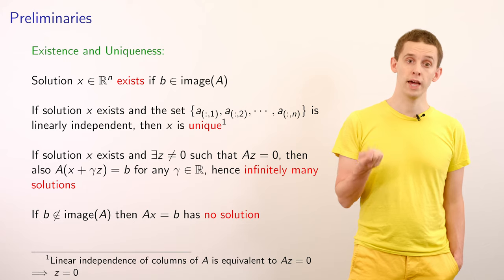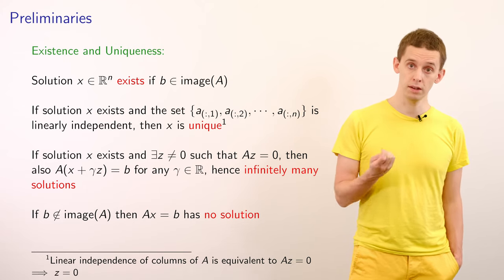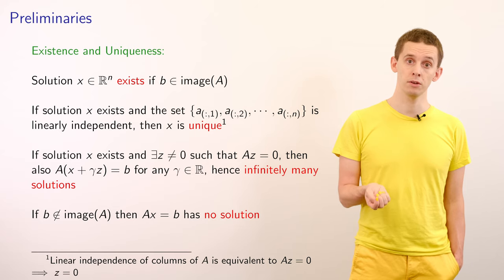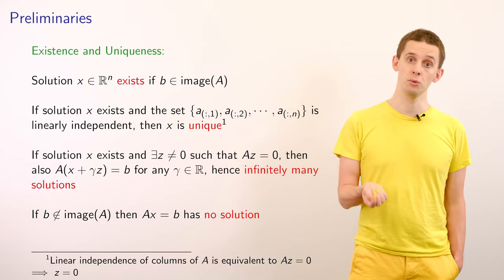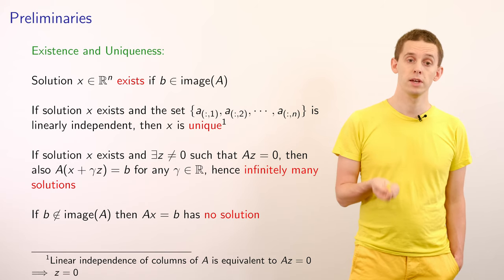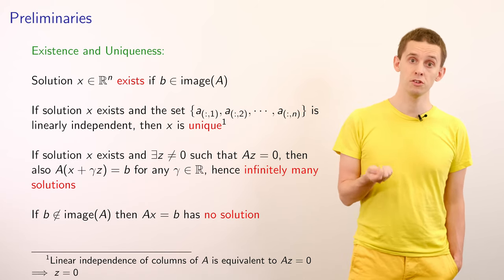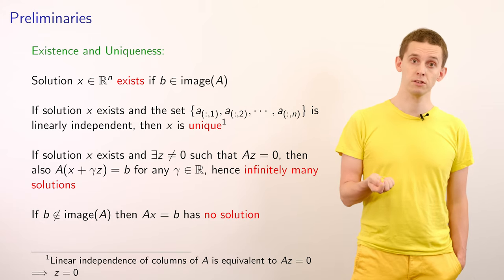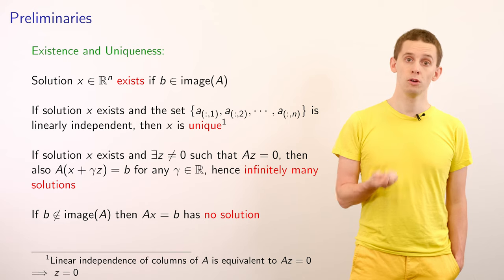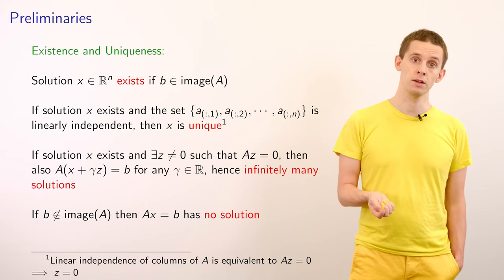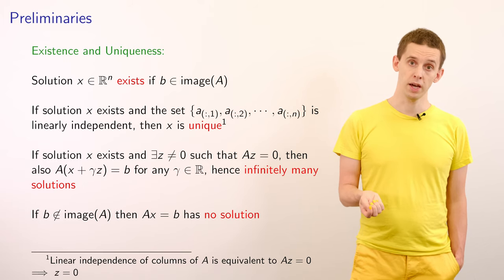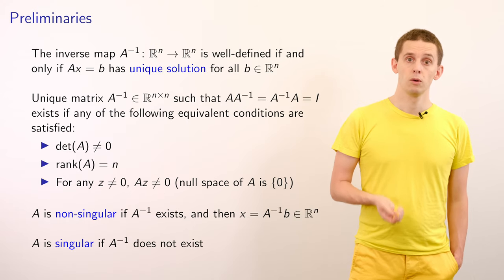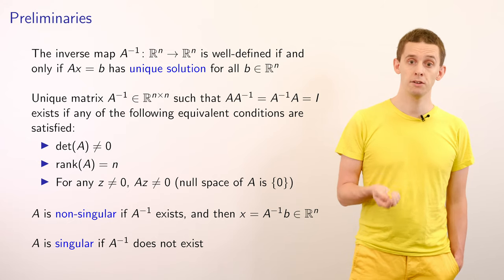So now let's look a bit further at existence and uniqueness. So we can say a solution X will exist if b is contained in the image of A. And if a solution exists and the columns of A are linearly independent, then we know that the solution is unique. If a solution exists and there is a vector Z that's non-zero, such that AZ = 0, then we can deduce that A applied to X + γZ for any real γ will also be a solution. And therefore we'll have infinitely many solutions. If b is not in the image of A, then a solution will not exist to Ax = b.